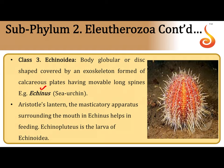Sea urchins belong to Class Echinoidea. They have a globular skeleton called a test or tunic, covered entirely by spines, so the closely fitted calcareous plates beneath are not easily visible. Some of these spines are mobile. They have a specialized chewing or masticatory apparatus just inner to their mouth referred to as Aristotle's lantern, which helps in the feeding process.